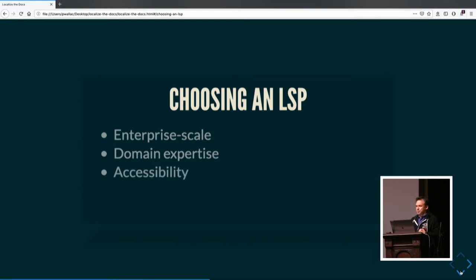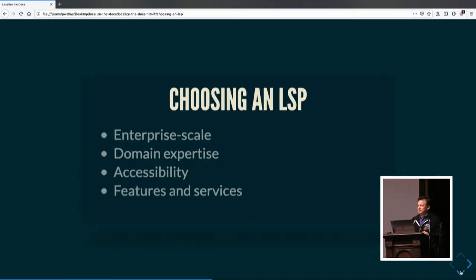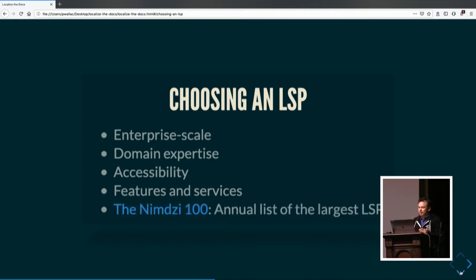Accessibility: they should be available. If you're using someone on the other side of the world and you can't get a hold of them when you need them, especially when an issue comes up, that's going to cause problems. The more readily available they are, the better. As for features and services, that really has to do with what you've identified on your side. There is an annual list of the 100 largest LSPs, and you could access this list and start pulling the thread.